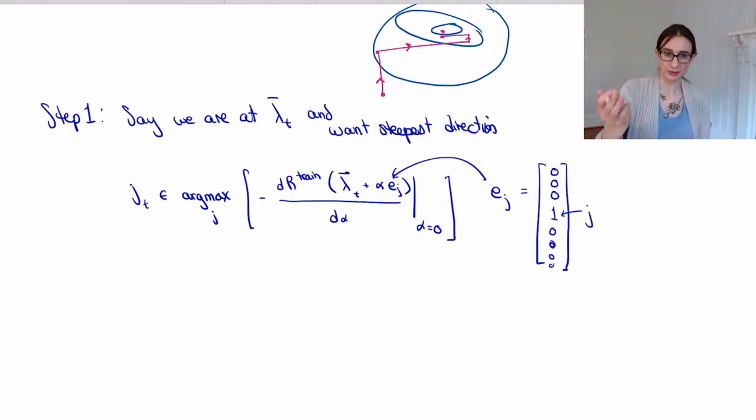So what is this? This is a directional derivative, or it's also called a Fréchet derivative. And it's telling you that you should take an infinitesimal step in each direction j, and then find out when you take that step what happens to r train. If r train decreases the most, then that's the direction, that's the step you want to take.